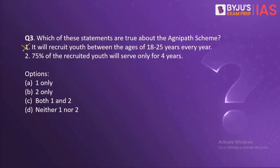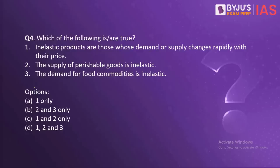So the first statement is wrong because the recruitment age is between 17.5 to 23 years, not 18 to 25. The second statement is correct — yes, 75% of the youth will serve for only four years. So our correct answer is B.